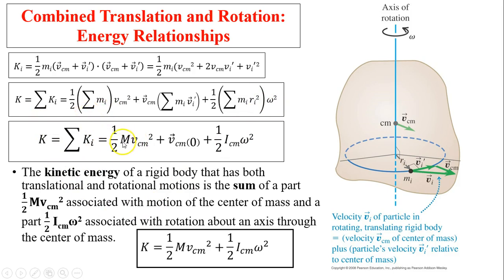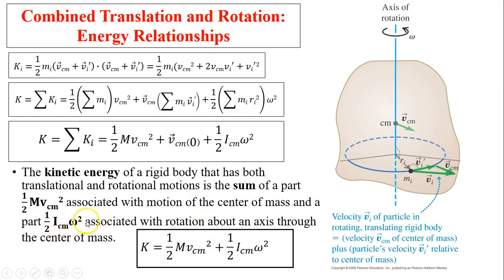The first term gives us one-half m times v center of mass squared — this is the translational kinetic energy of the center of mass. The second term, m_i v_i prime, is the velocity of the center of mass relative to the center, which is just zero. The third term, m_i r_i squared, gives us the moment of inertia, so that is the kinetic energy of rotation. The total kinetic energy of a rigid body with both translational and rotational motion is the sum: one-half m v_cm squared, plus one-half I_cm times omega squared.